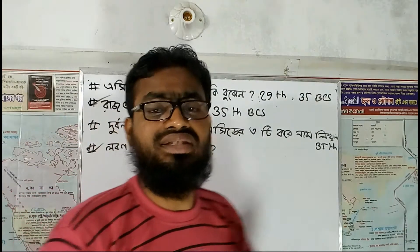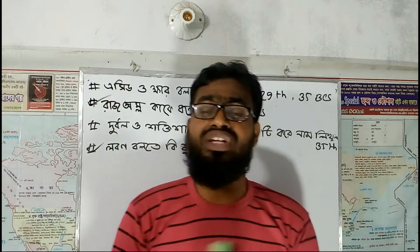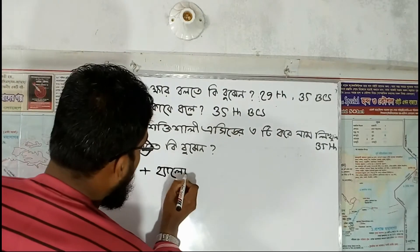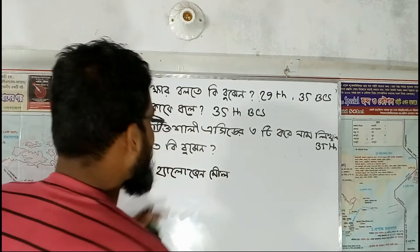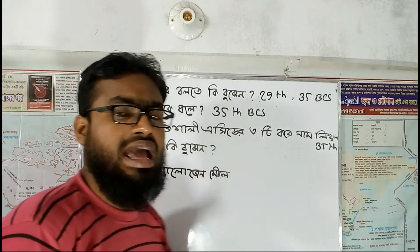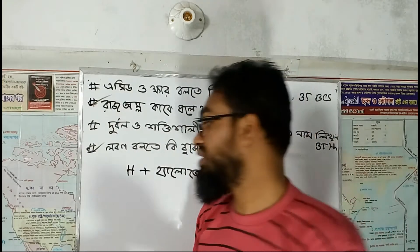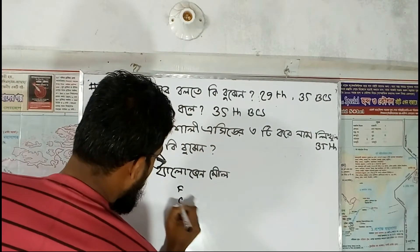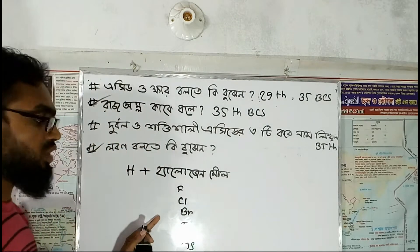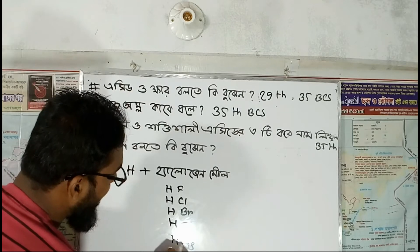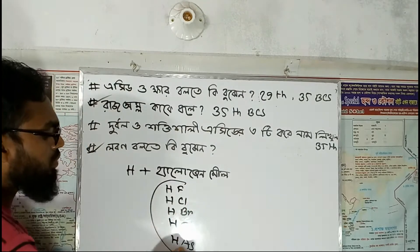One key condition is that hydrogen will come first. Whenever you see hydrogen in the middle position, then it will definitely not be an acid. Hydrogen plus halogen — hydrogen plus halogen — gives us hydrofluoride, hydrochloride, hydrobromide, hydro iodide. So these are acids.